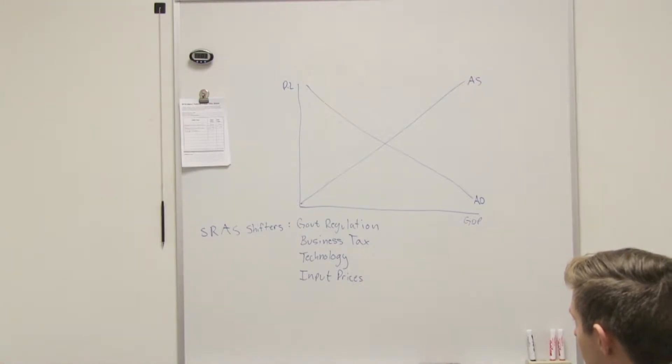Okay, so let's say we have a change of technology that we can produce faster. What's that going to... Shift it right, right? It's going to shift it down to the right.